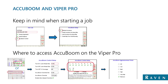On the next screen in Viper Pro, this is a very important function: if AccuBoom is not controlling certain sections, make sure they are checked in this screen. This is where you set up which sections AccuBoom will control for that product. The following page is where you set up the AccuBoom aggressiveness factor — make sure that is set up to your liking.